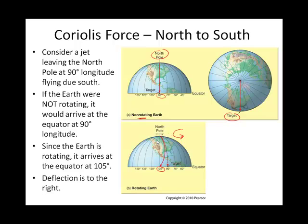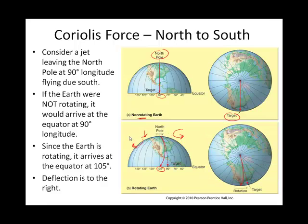That deflection — from 90 to 105 degrees — is to the right. If you're standing at the North Pole heading toward the equator, the deflection is to your right. That is what we call the Coriolis force, and it is to the right in the Northern Hemisphere. Correspondingly, it is to the left in the Southern Hemisphere.